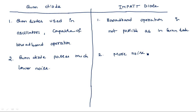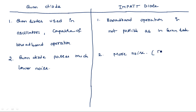The reason IMPATT diodes are more susceptible to noise is because IMPATT is an avalanche transit time device operating with the avalanche process. The avalanche process involves multiplication of charge carriers, and avalanche process itself is a noisy process. So the noise in IMPATT is due to the avalanche process.